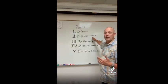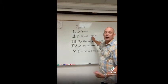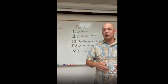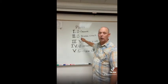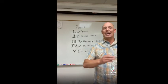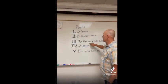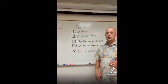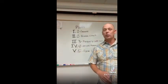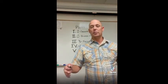If you look at what we're doing here, 220.14(G) tells us that a show window has 200 volt-amps per linear foot of show window. This is for adding a branch circuit to an existing service, because Part 2 is talking about adding a branch circuit.